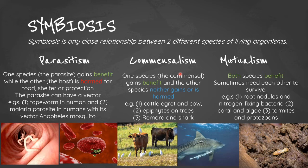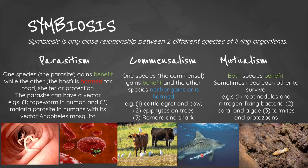In commensalism, one species — the commensal — gains benefit, while the other species neither gains nor is harmed. For example, the cattle egret perches on a cow's back and gains food in the form of ticks, fleas, and insects disturbed by the cow as it moves through grass. Another example is the remora, a small fish that attaches itself to a shark by a suction cap on its head and gains food scraps left by the shark.